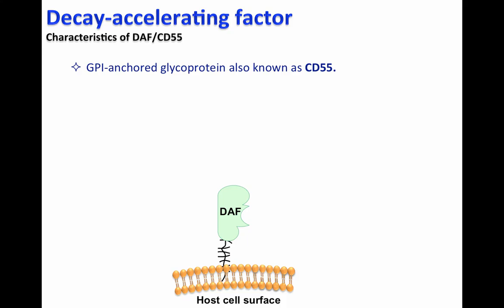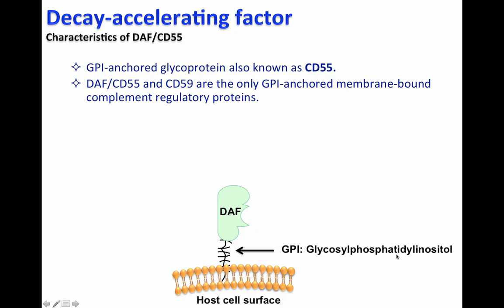DAF is a GPI-anchored glycoprotein, also known as CD55. As you can see here, DAF or CD55 is attached or anchored to the host cell surface by a molecule called glycosylphosphatidylinositol, or GPI.